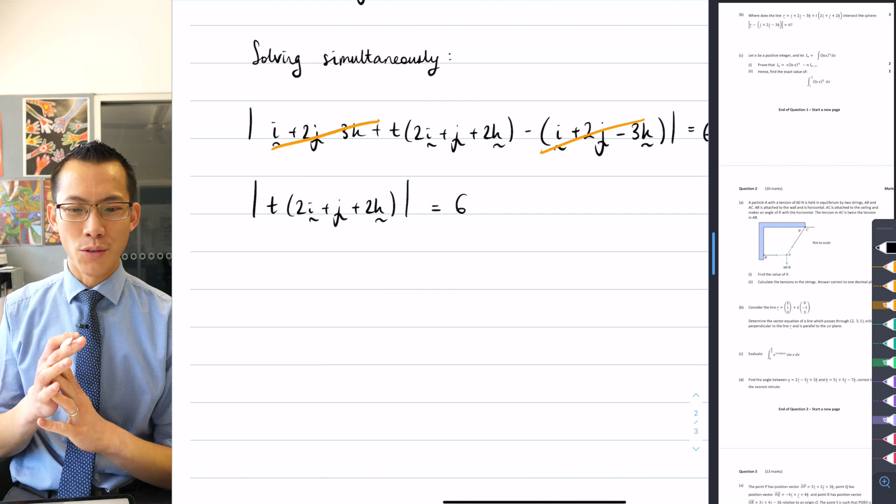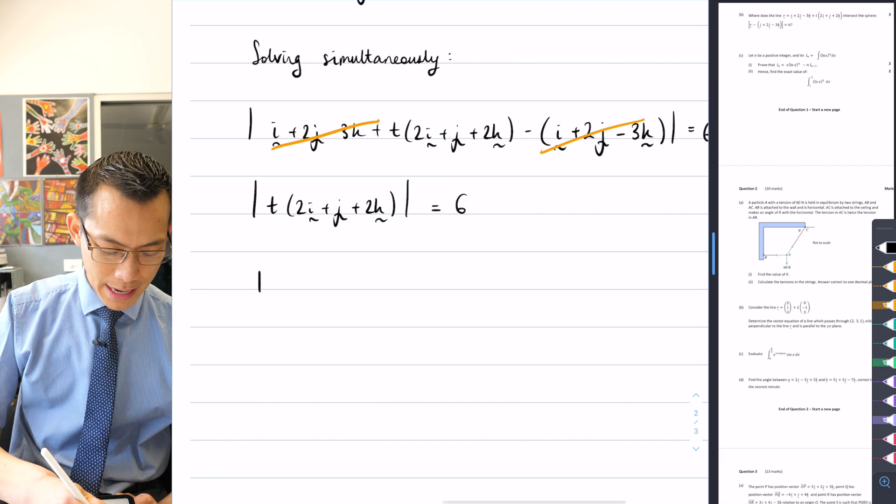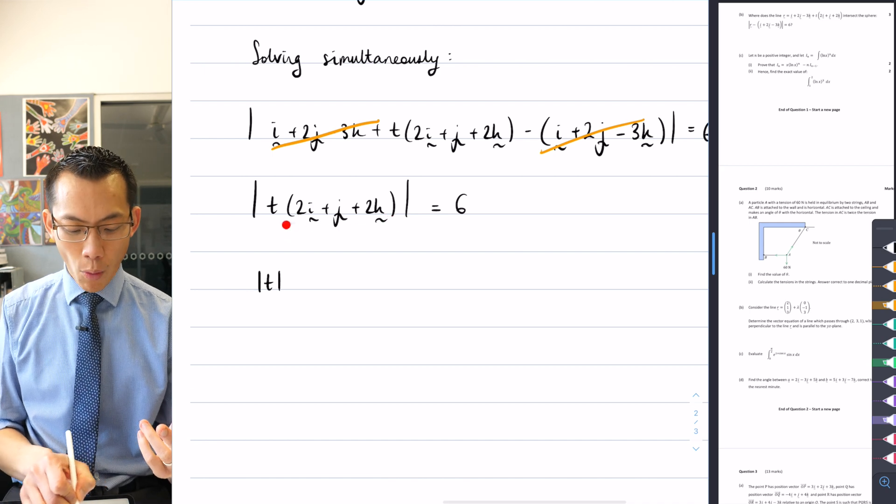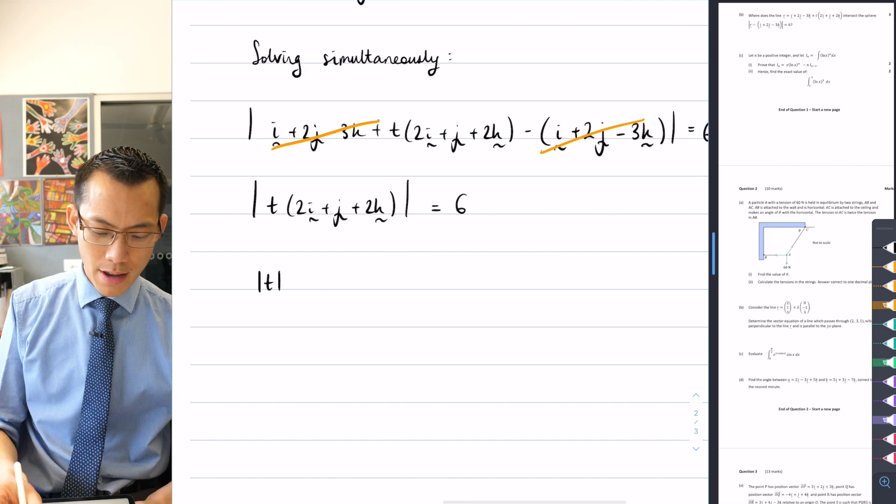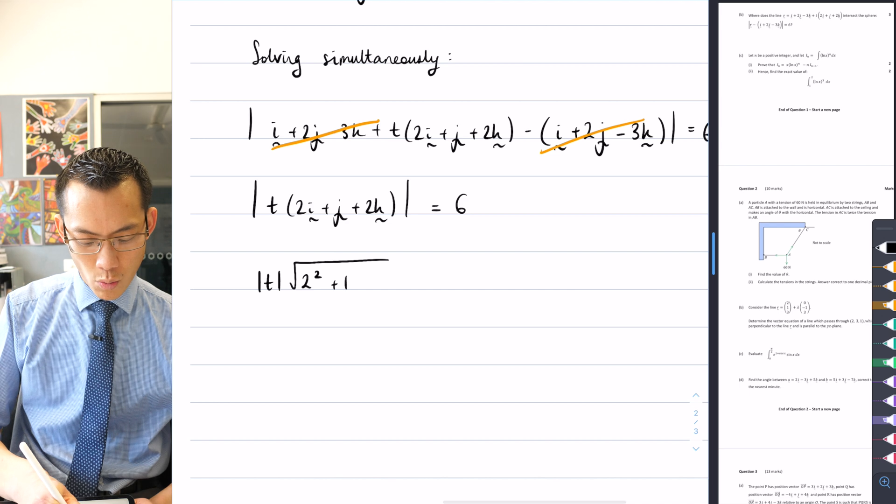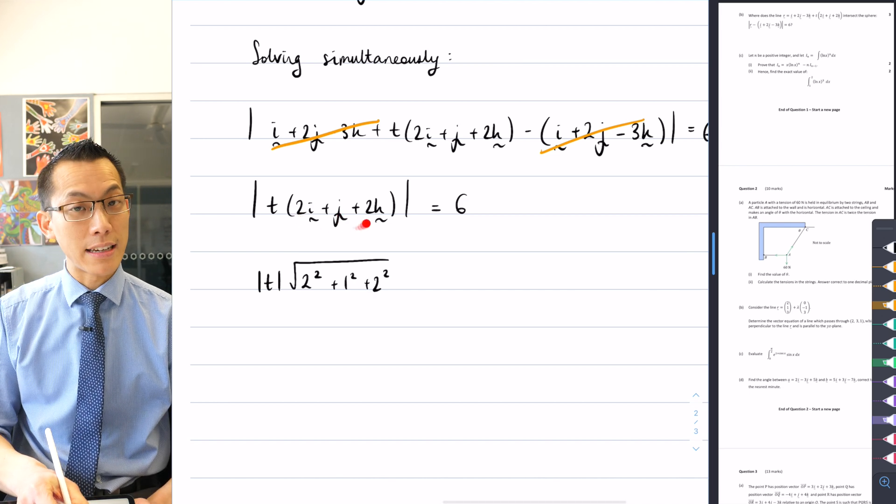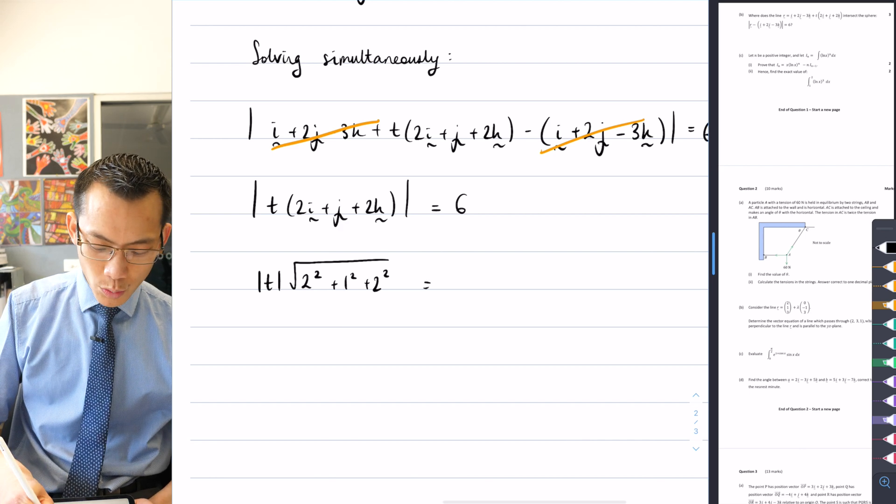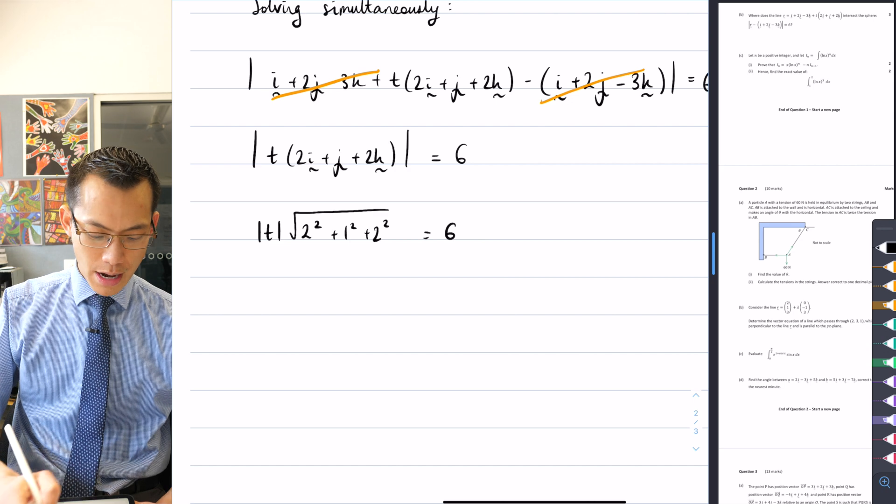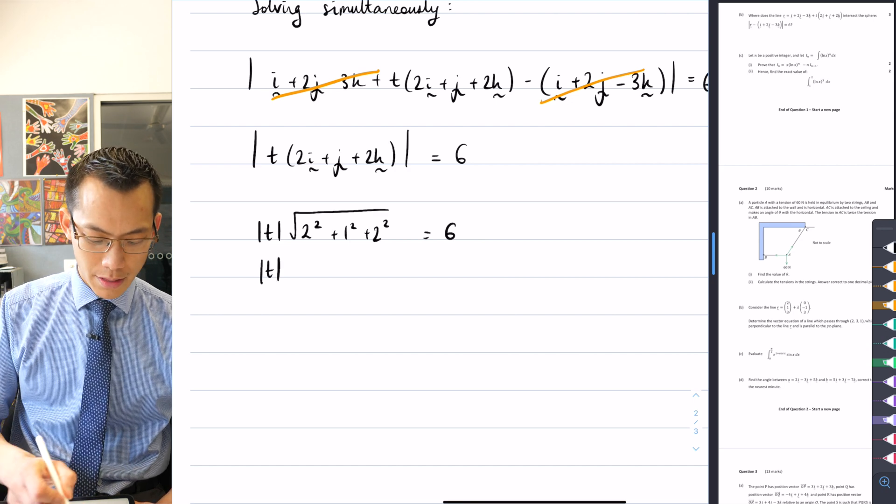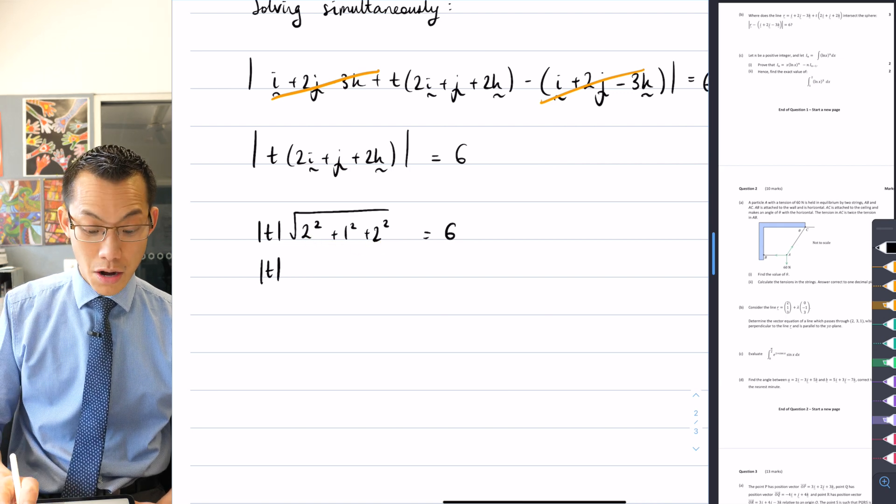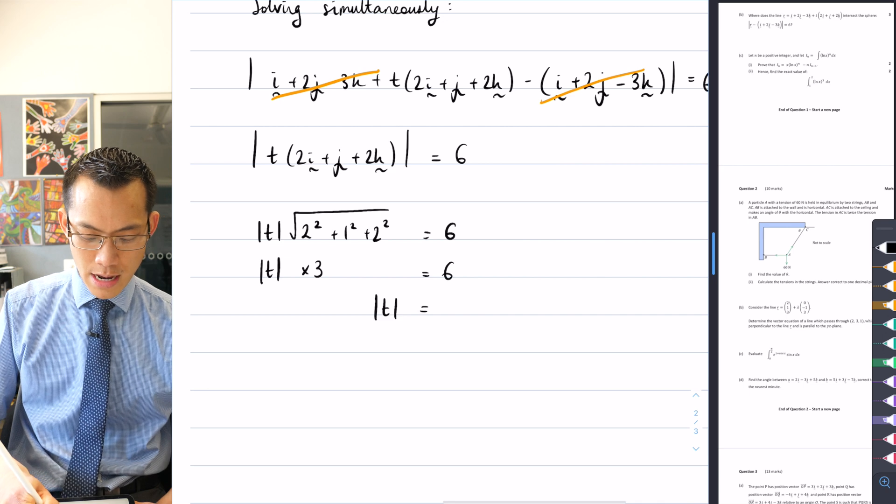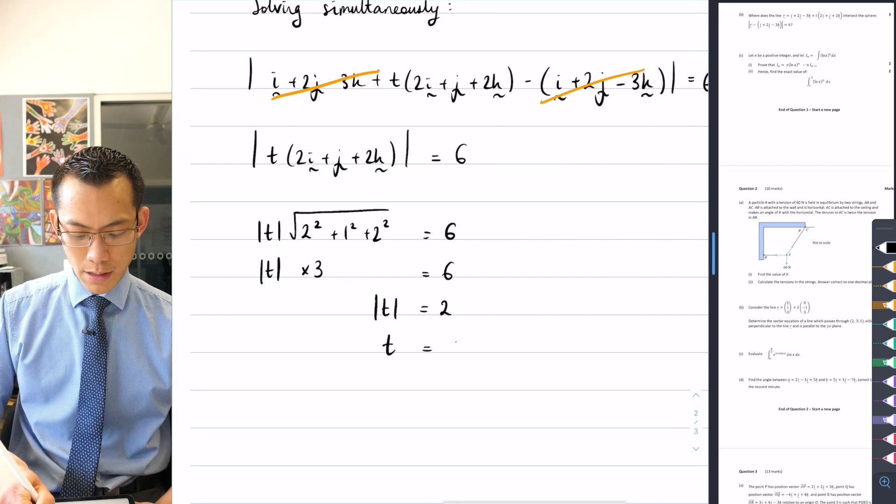I can get rid of the absolute value notation by pulling out the parameter t and applying that absolute value to the distance to the point. So this is just Pythagoras—it's going to be the square root of 2 squared plus 1 squared plus 2 squared. That equals 6. This is 4 plus 1 plus 4, so that's 9, so the square root of 9 is 3. That gives me absolute value of t equals 2, so t can be plus or minus 2.